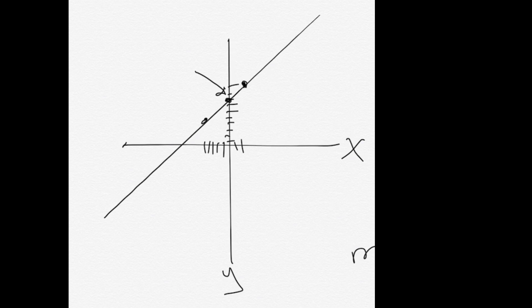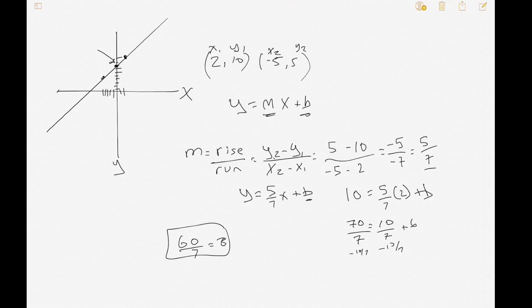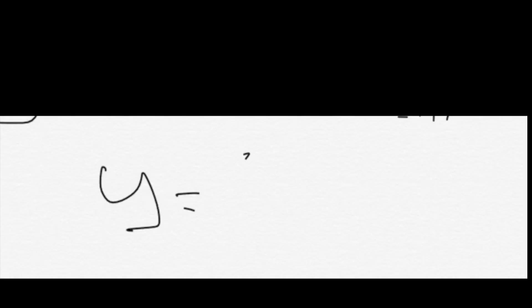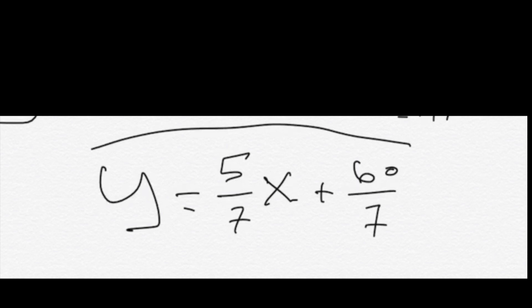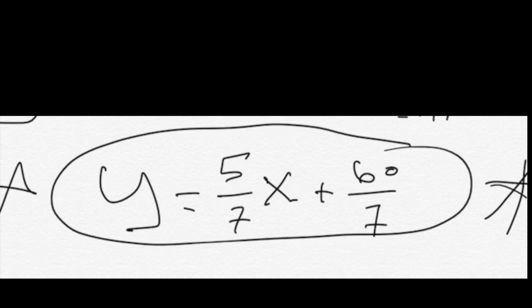Now we have our answer. The formula is y equals the slope which is 5/7 times x plus b which is 60/7. And that is the answer. Good stuff. If you have any other questions, put it in the comments.